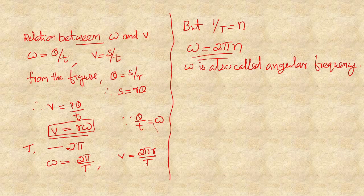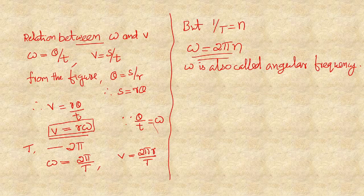Now let us move to the next quantity. If a particle has a velocity and that velocity is changing, we say that the particle has an acceleration. Similarly, if the angular velocity is changing with respect to time, then we say that the particle has an angular acceleration.